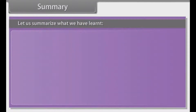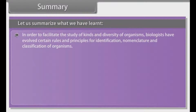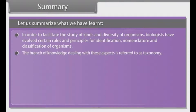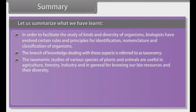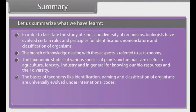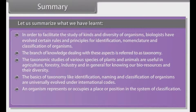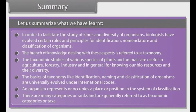In order to facilitate the study of kinds and diversity of organisms, biologists have evolved certain rules and principles for identification, nomenclature and classification of organisms. The branch of knowledge dealing with these aspects is referred to as taxonomy. The taxonomic studies of various species of plants and animals are useful in agriculture, forestry, industry, and for knowing our bio-resources and their diversity. The basics of taxonomy — identification, naming and classification — are universally evolved under international codes. An organism occupies a place or position in the system of classification, and there are many categories or ranks generally referred to as taxonomic categories or taxa.